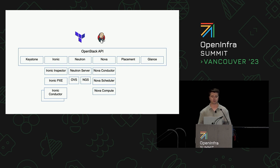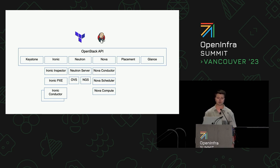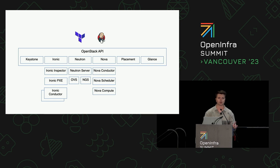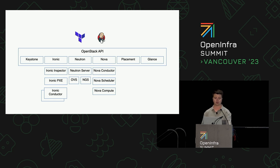Then if you move into the middle of the architecture we've got Neutron. To move a bare metal node from network A to network B — like from the provisioning network to the tenant network — we use Networking Generic Switch, which allows you to SSH into a switch or use an API to interact with it. NGS is the plugin we use, and if you have multiple switch vendors in your environment, Networking Generic Switch can allow you to have one plugin to rule them all — and that's exactly what we do.